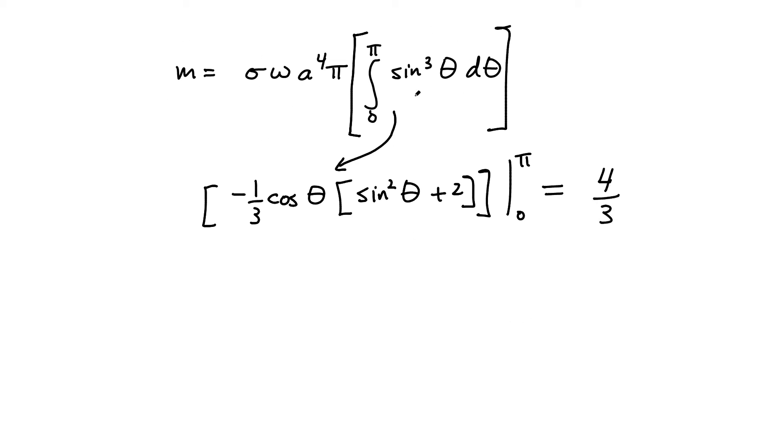Now we're going to go back and substitute it in over here. So what you get is four thirds, a sigma omega, a fourth times pi. Now again, this is the final expression. What you can do, however, if you wanted to, we can take it a step further. And we could eliminate what this sigma is, because we know from the previous page that our sigma was equal to the total charge divided by the total area of that sphere, which is four pi a squared. So let's go ahead and kind of just do that to get one final expression for our magnetic moment.